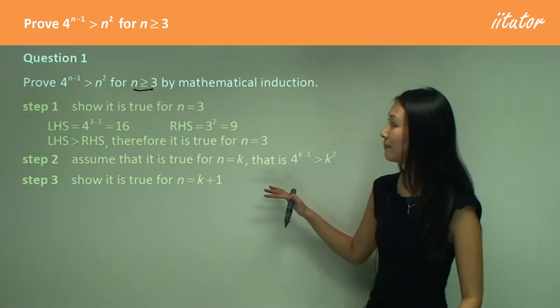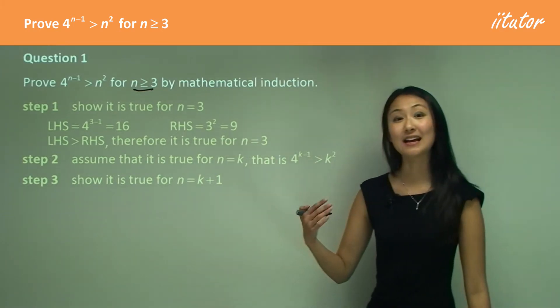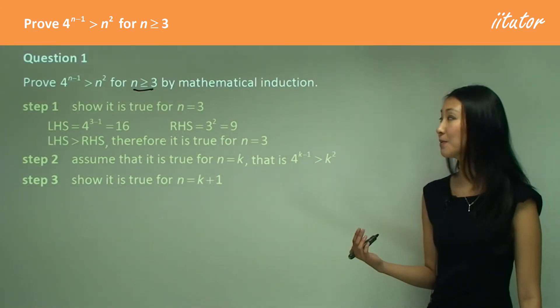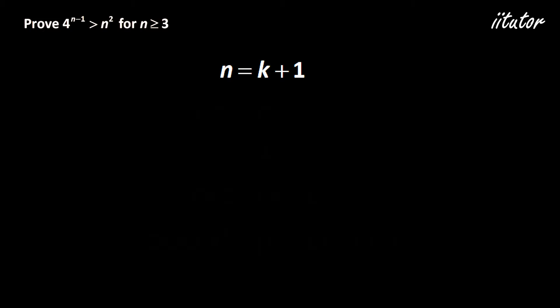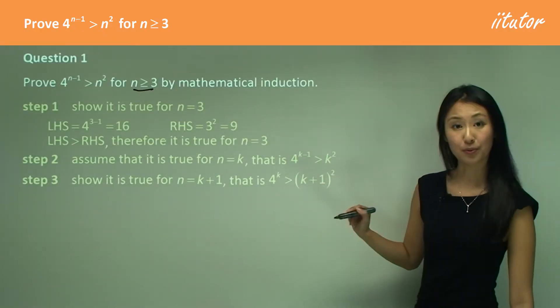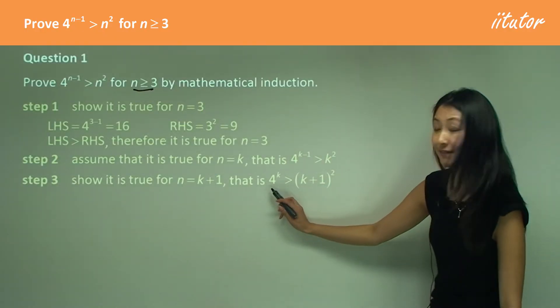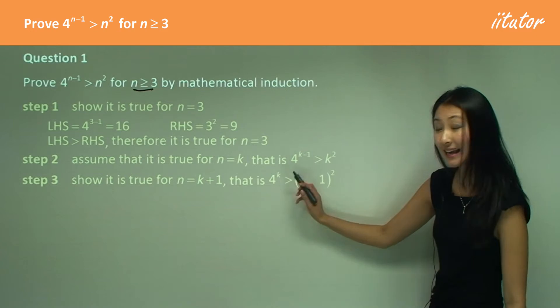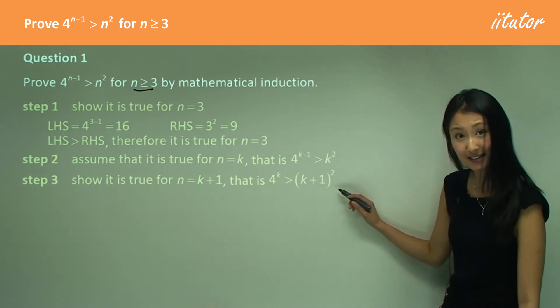Now in step three, we show it is true for n equals to k plus 1. So we substitute in k plus 1. Over here, if we have k plus 1 minus 1, that's going to become 4 to the power of k. And here we have n squared, so that will be k plus 1 squared. So this is what we want to prove — we want to prove that this left hand side is greater than the right hand side.